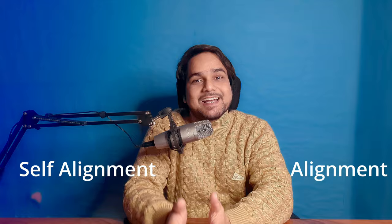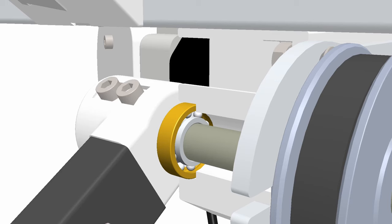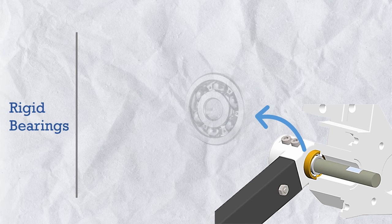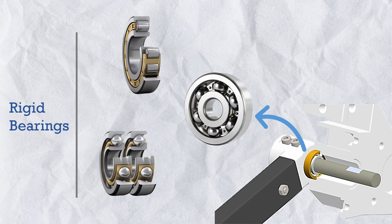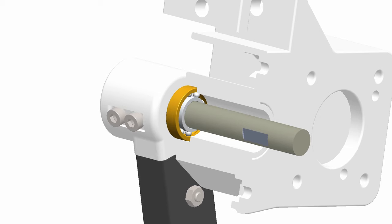In applications where we use a single bearing to support a rotating load, misalignment cannot occur. So in single bearing applications we do not need misalignment bearings — we use simple rigid bearings like deep groove ball bearings, cylindrical roller bearings, or pairs of angular contact or taper roller bearings, which support only rotational motion and constrain all other movements to achieve high-precision motion.